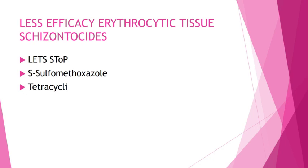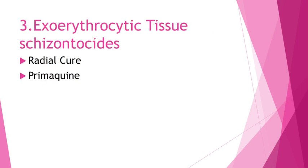For less-efficacy erythrocytic schizontocytes, the mnemonic is LESS STOP: S stands for sulfamethoxazole and T stands for tetracycline. Third is exo-erythrocytic schizontocytes, used for radical cure. The primary working drug here is primaquine.